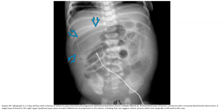Supine AP radiograph in a two-day-old infant with a history of failure to pass meconium and progressive abdominal distension shows somatropodilation and fluid-filled loops of bowel consistent with neonatal distal bowel obstruction. A single loop of bowel in the right upper quadrant is dilated out of proportion to the other findings, which can suggest colonic atresia — surgically confirmed in this case.